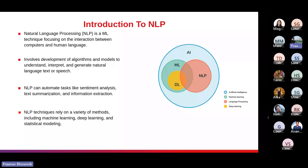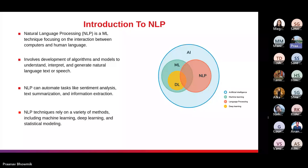NLP techniques rely on a variety of methods including machine learning, deep learning, and statistical modeling. These techniques involve tasks such as tokenization, part-of-speech tagging, named entity recognition, syntactic parsing, and semantic analysis. These are some of the key components of NLP and how we use it in current life.